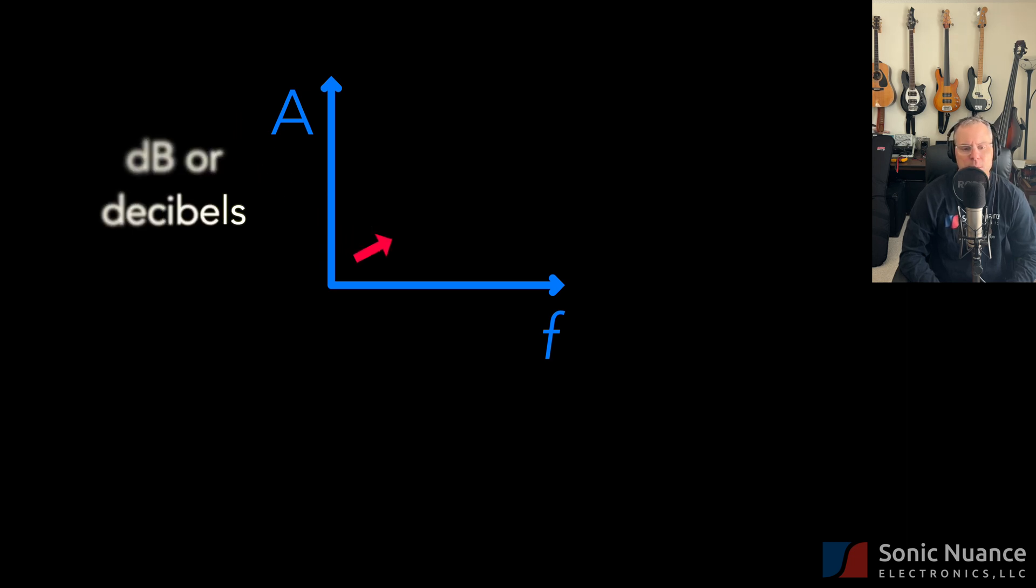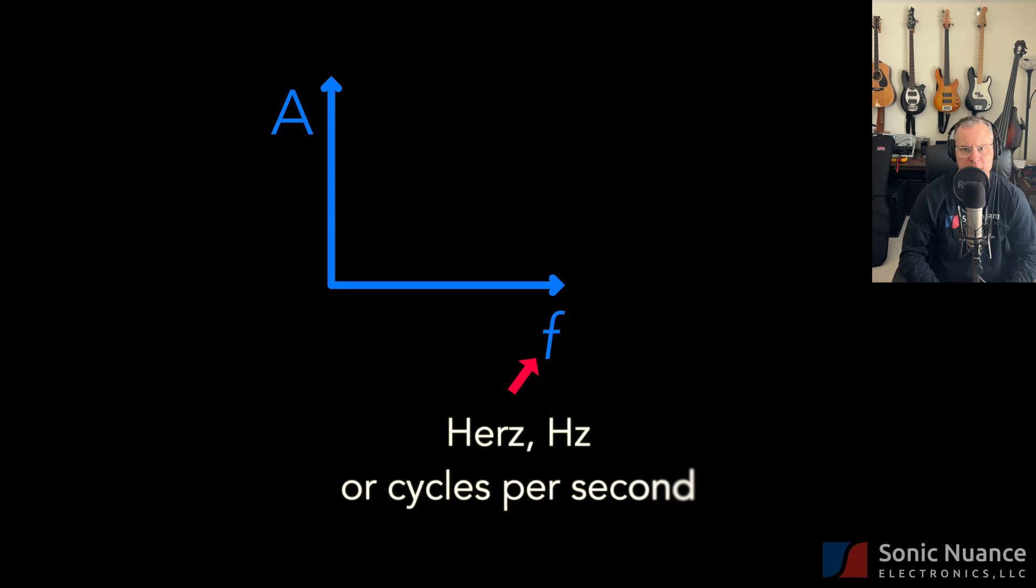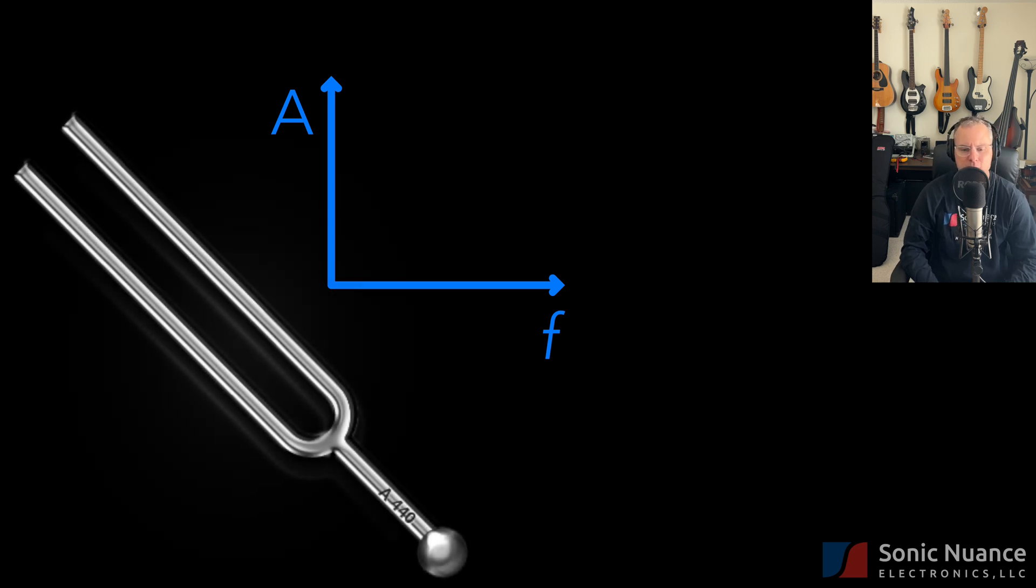For frequency units, you will hear the term hertz, abbreviated as Hz, or cycles per second. Let's show what this plot looks like for two different pure sine waves. The first may be familiar to a lot of you.